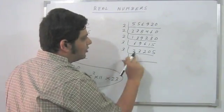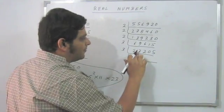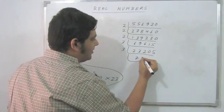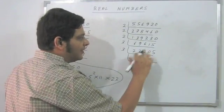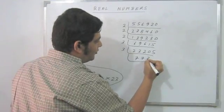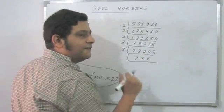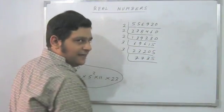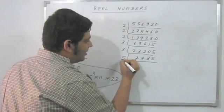What do I get now? 7735, so I get a 5 here, still divisible by 5.